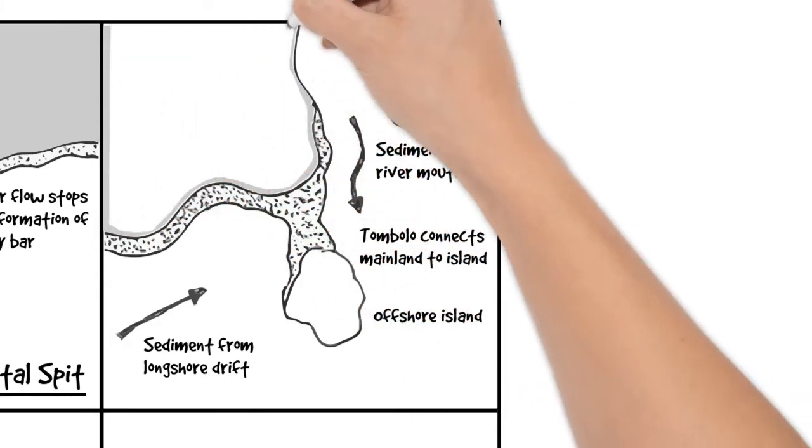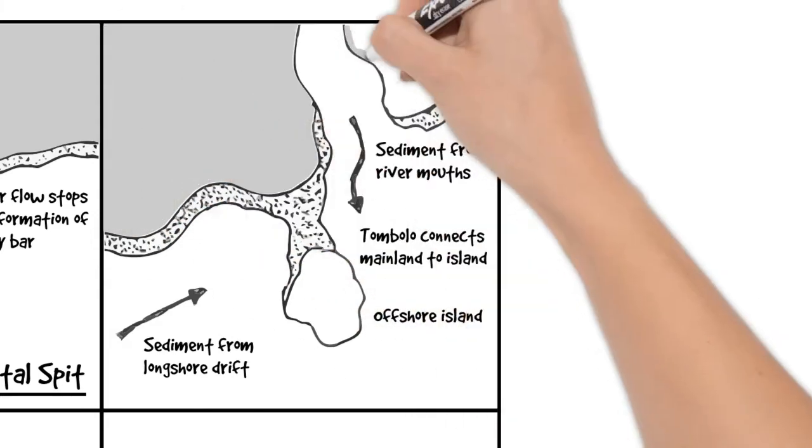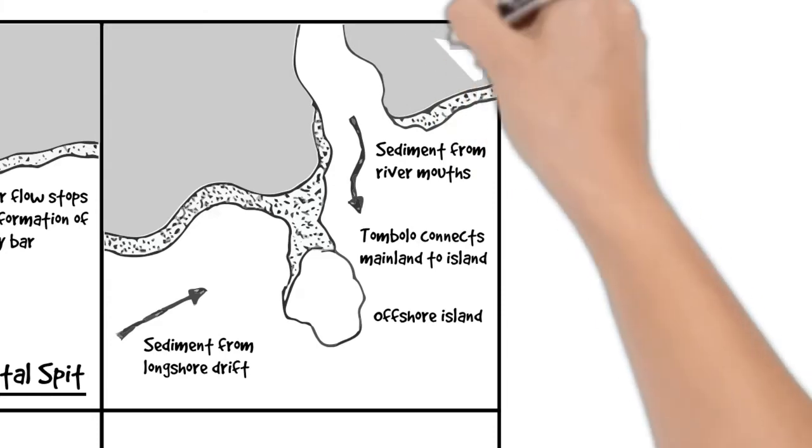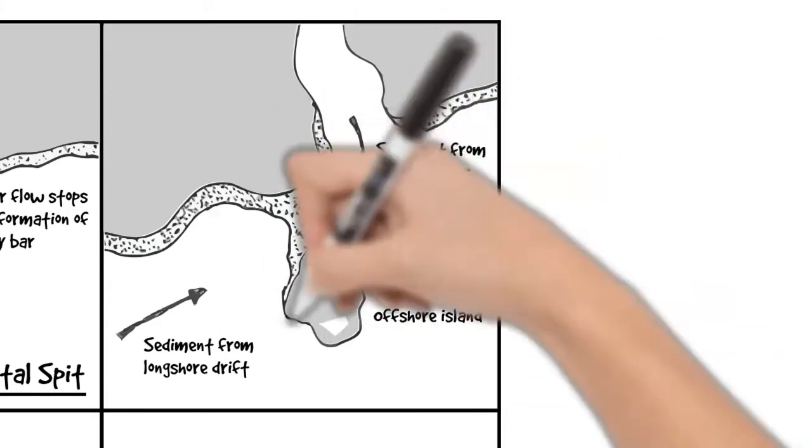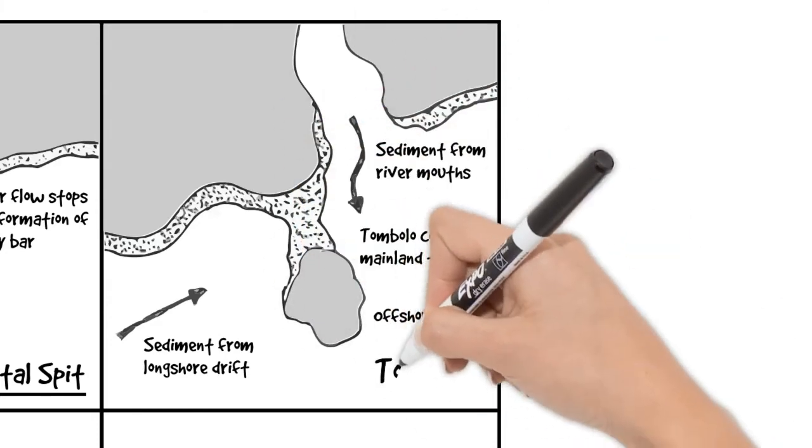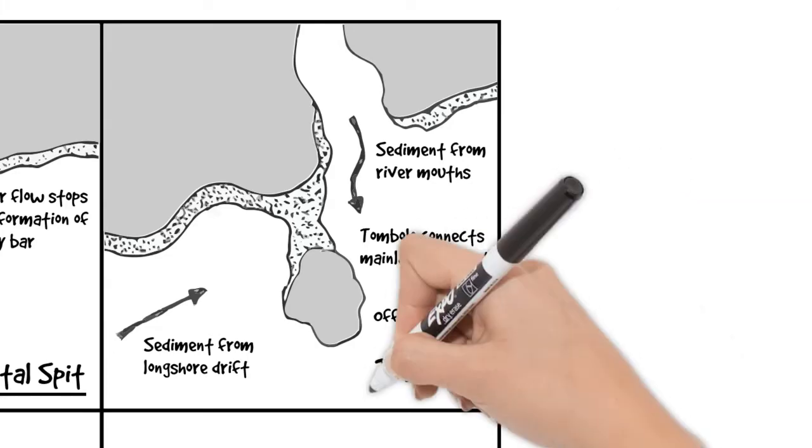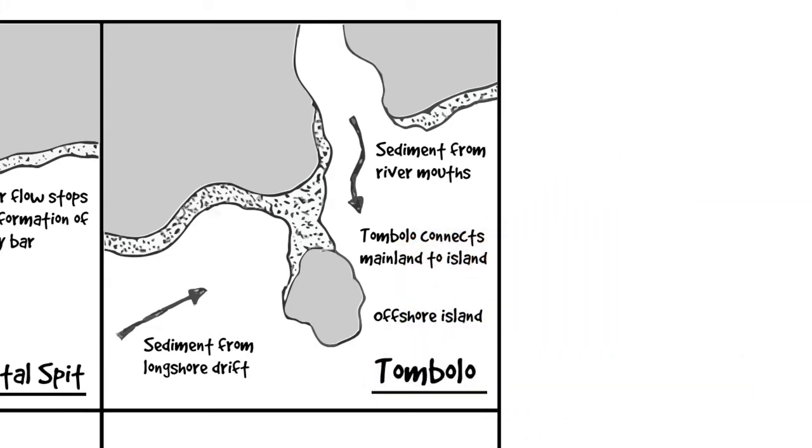We've got a tombolo. Don't forget, that's just shading the land to make it nice and clear. And we're going to add a title as well to remind us that we're looking at a tombolo. Underline it so you know it's a title.